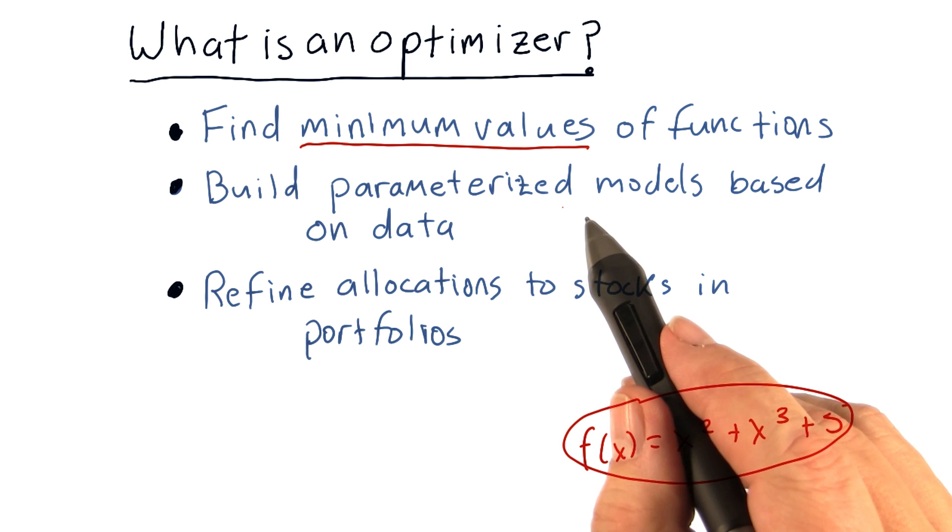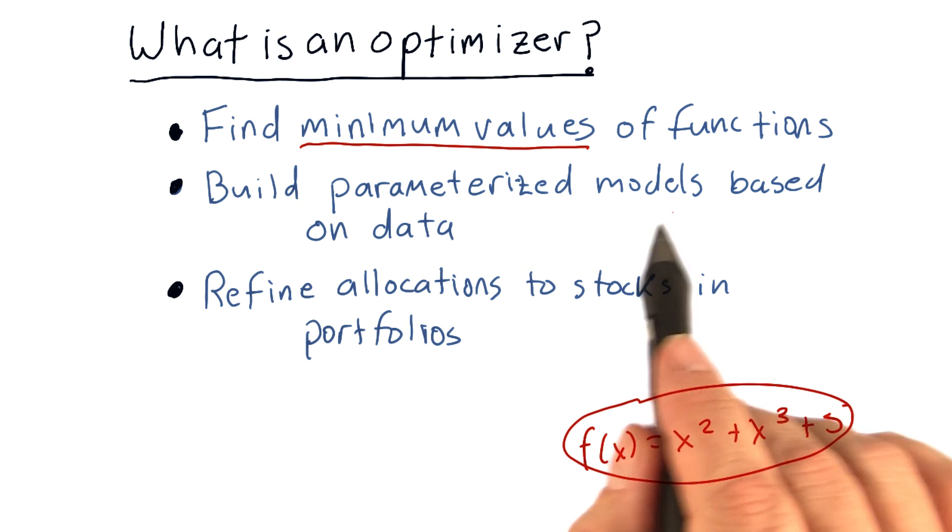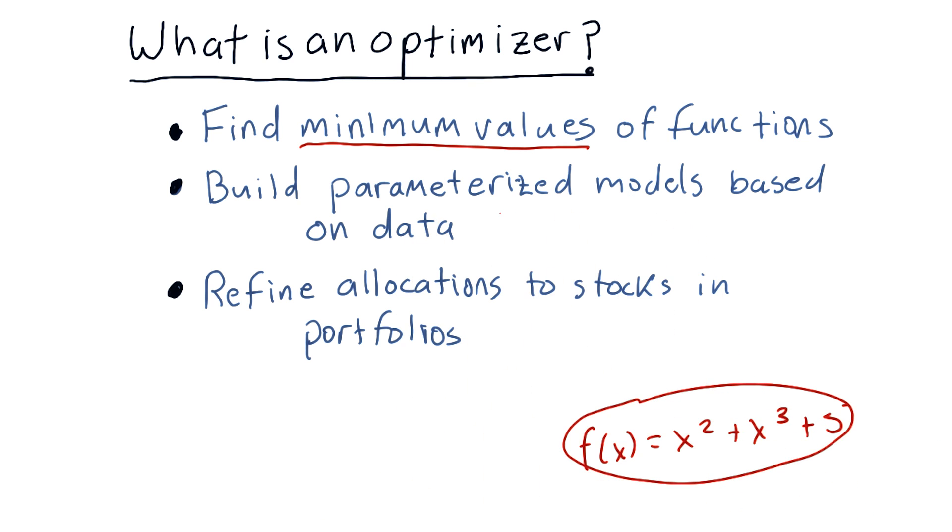Another thing that optimizers can do is find the parameters for parameterized models from data. We might have some data from some experiment, and we can use optimizers to find a polynomial fit to that data. That's actually one thing we're going to learn in this lesson.